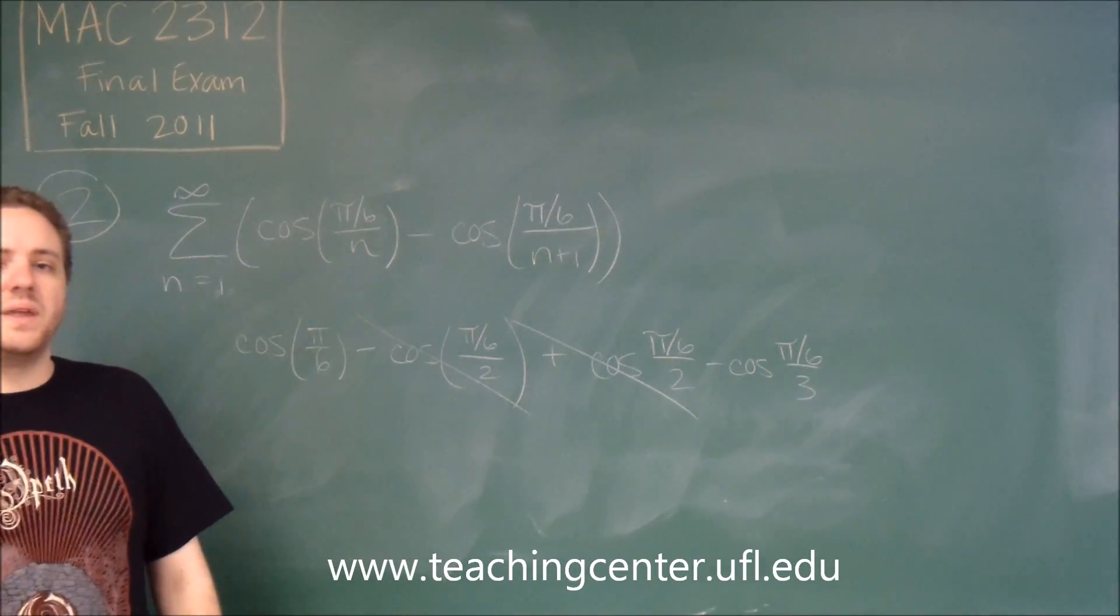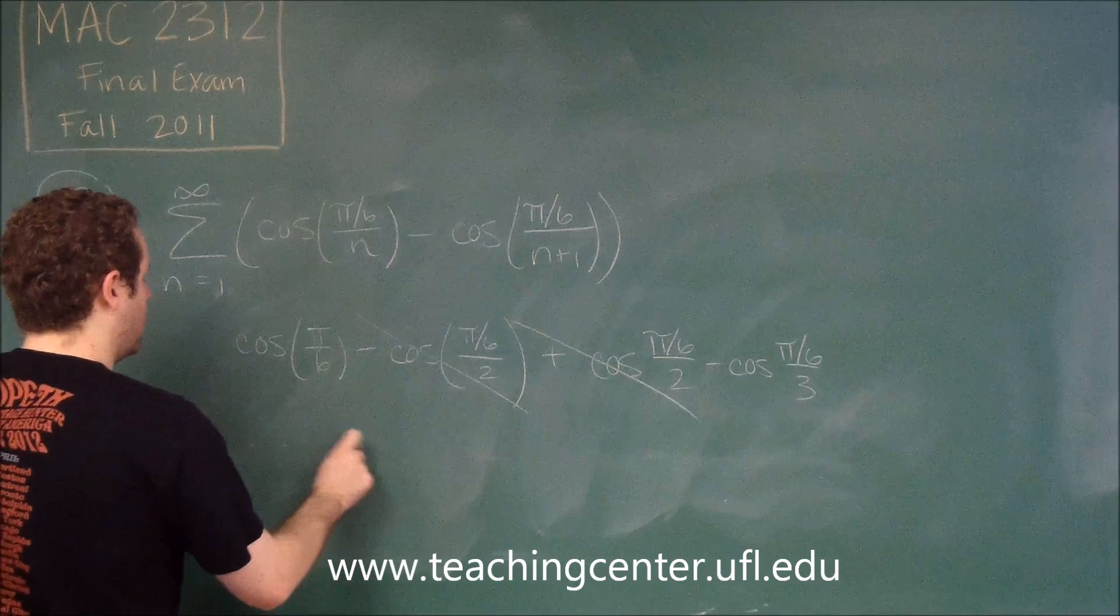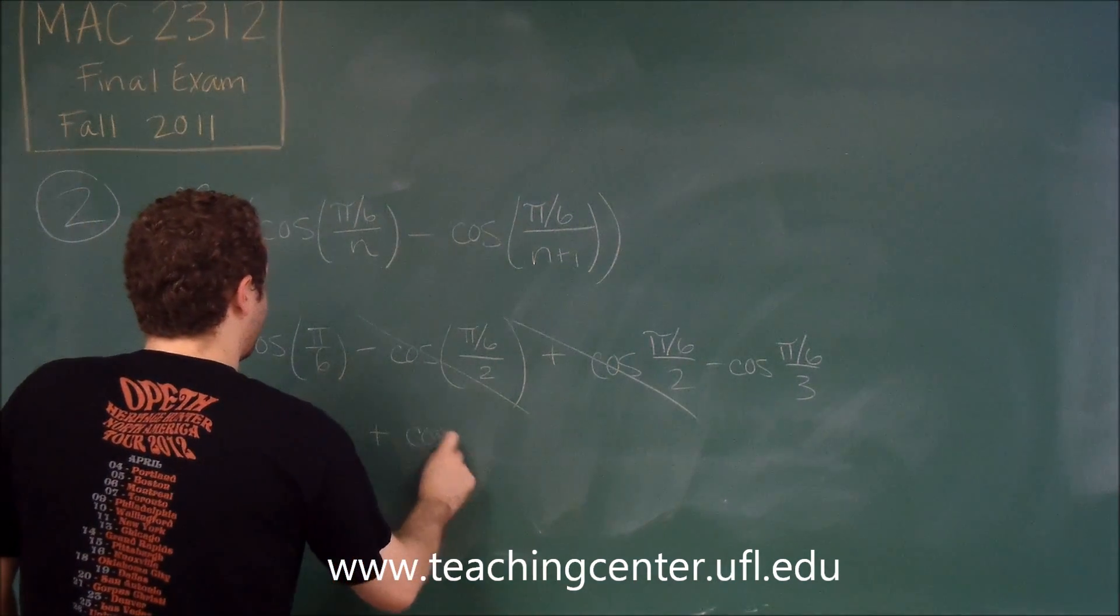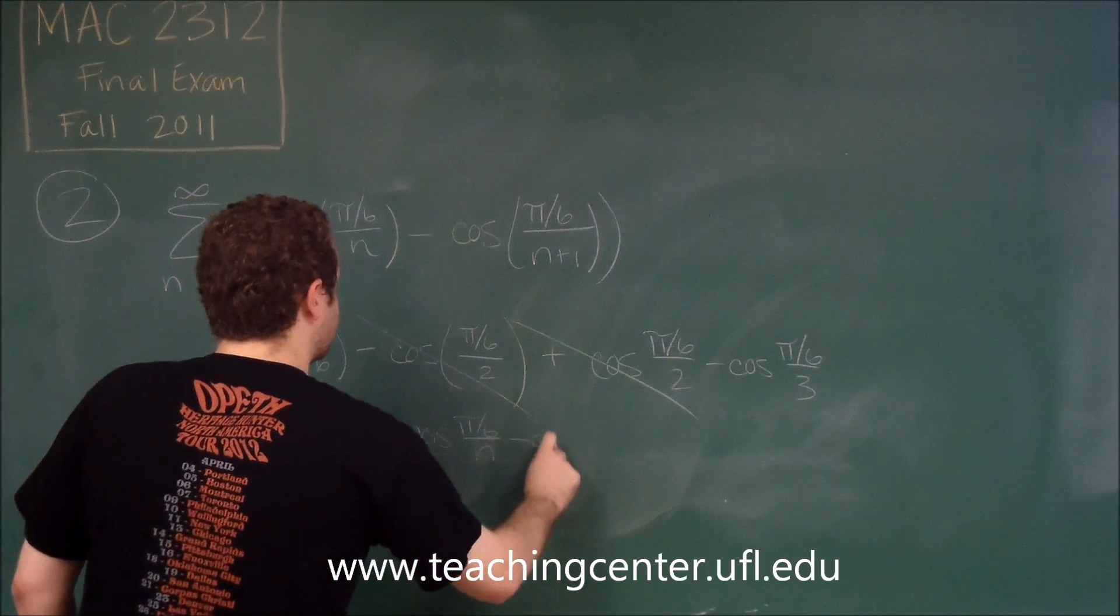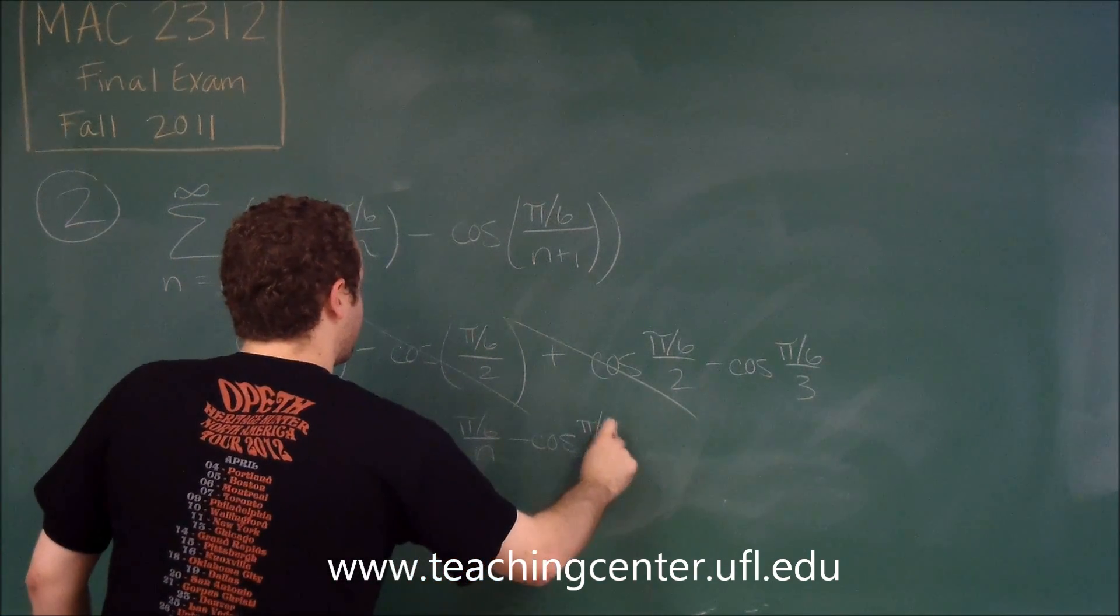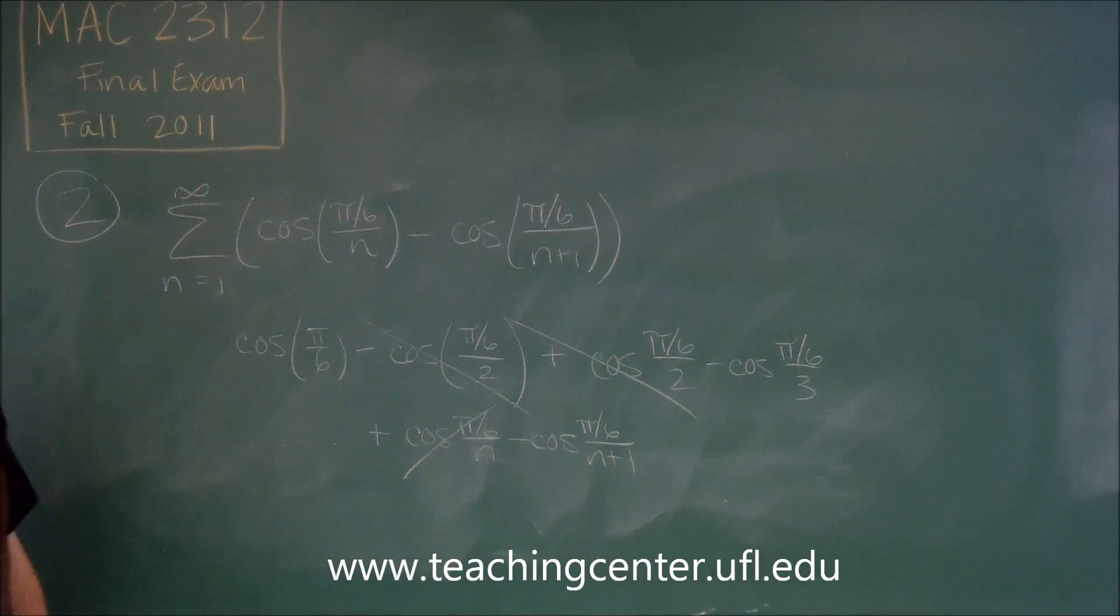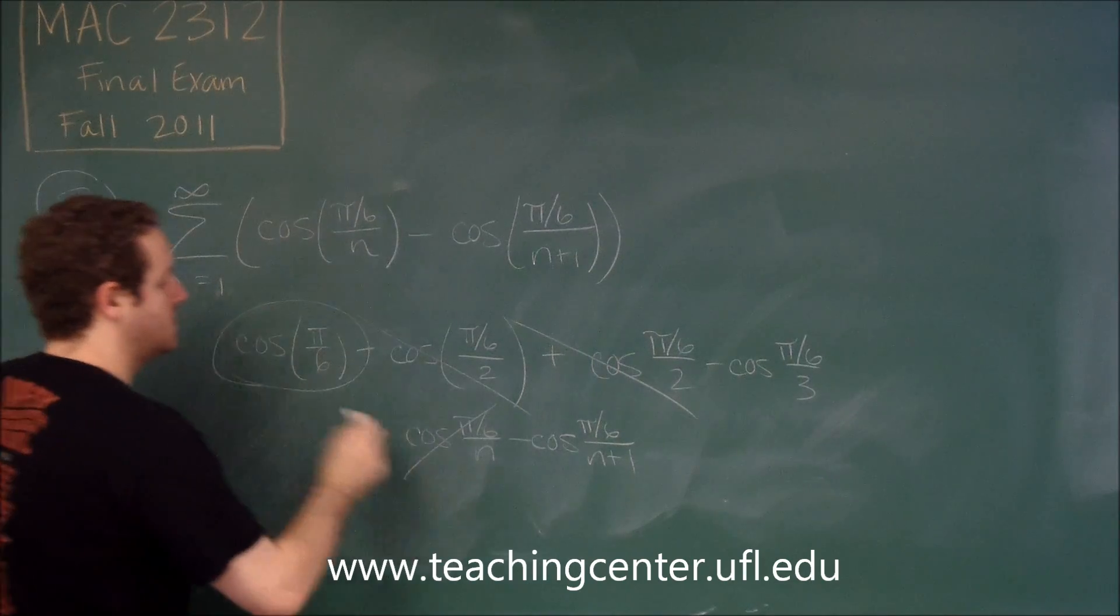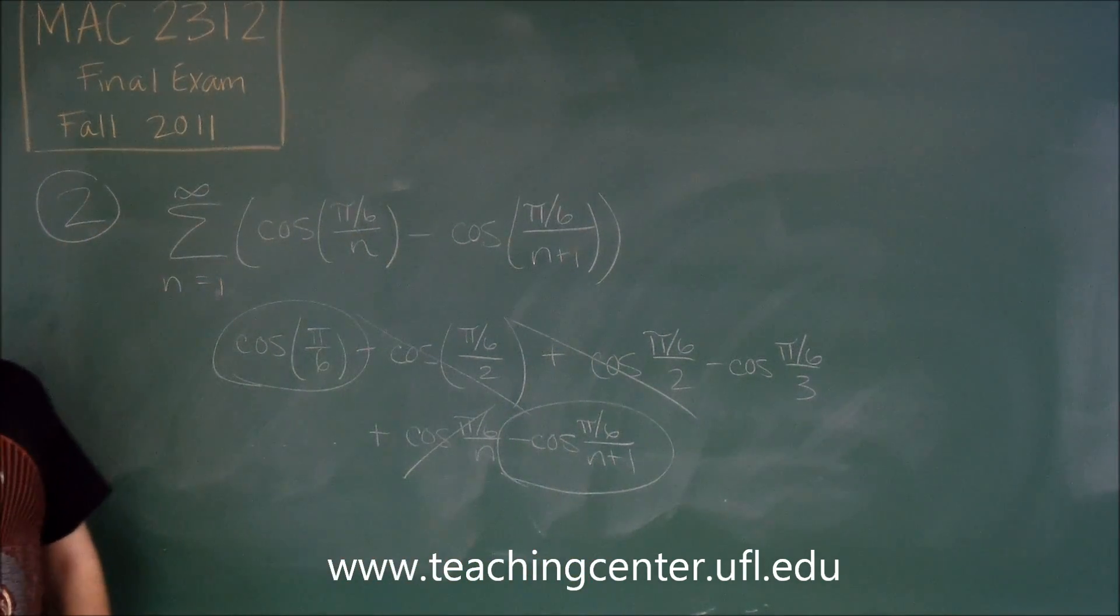And the 3's are going to cancel out for the next term, and they're all going to start canceling out. So the only one that won't cancel out is the very last term. So now you're at the end, you have cosine pi over 6 over n minus cosine pi over 6 over n plus 1. And this would have canceled out with the previous term. So you're left with cosine pi over 6 minus cosine pi over 6 over n plus 1.